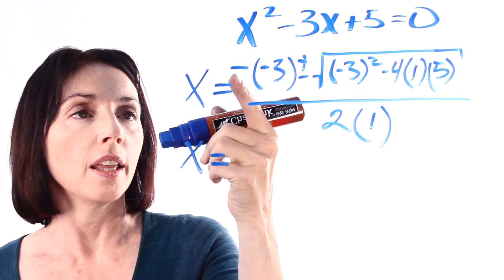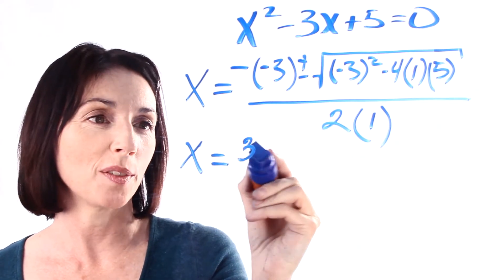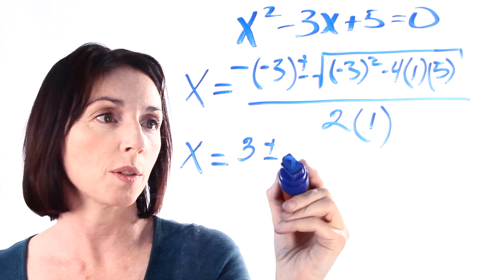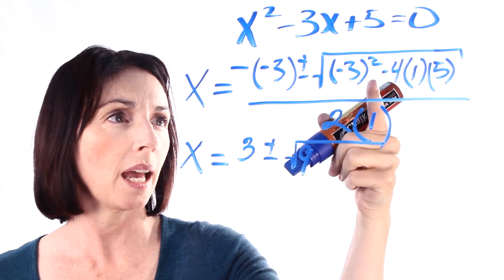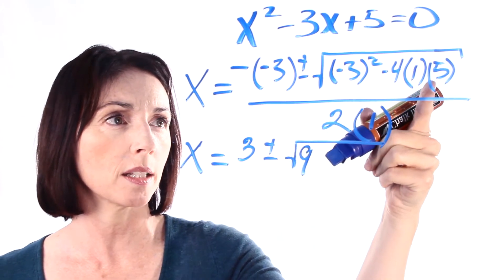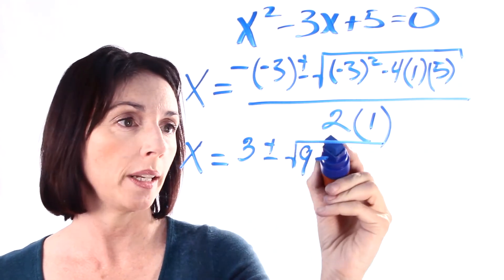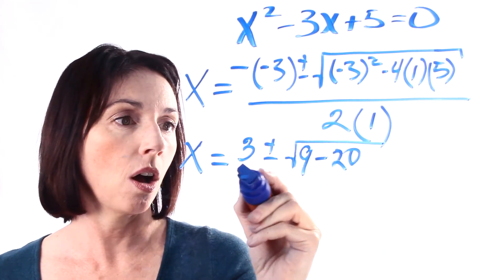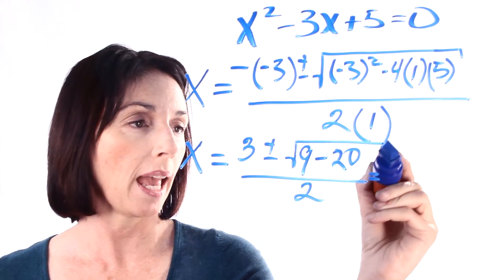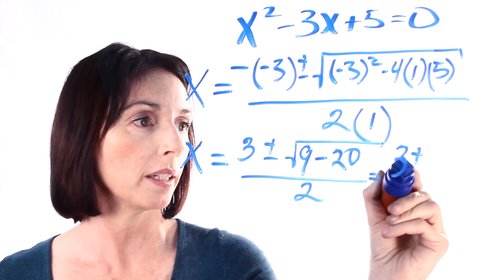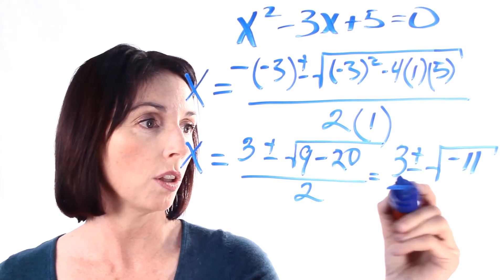x equals the opposite of negative 3, or the negative of negative 3 is just positive 3, plus or minus the square root of negative 3 squared is 9. Now here we have a minus and this is a plus and this is a plus, so we're going to still have a minus. 5 times 1 is 5, 5 times 4 is 20. All of that over 2 times 1 which is just 2. So we have 3 plus or minus the square root of 9 minus 20 is negative 11, all over 2.